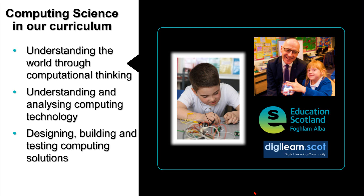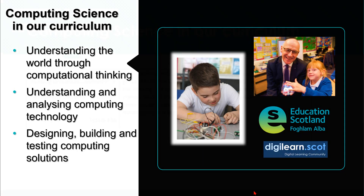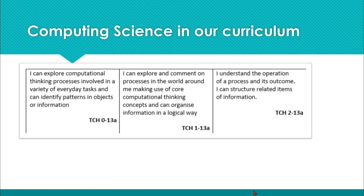It's incredibly important that we link computing science into other subject areas and see those links with maths and numeracy, literacy, expressive arts, sciences, and social subjects. It's important that we show the relevance to all learners — that computing science is for them, particularly linking it to subjects that are popular with females, such as literacy, social subjects, and expressive arts. Computing science is for everyone.